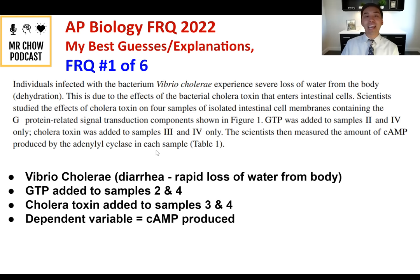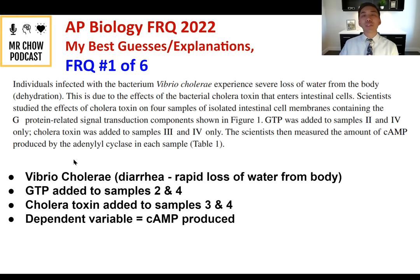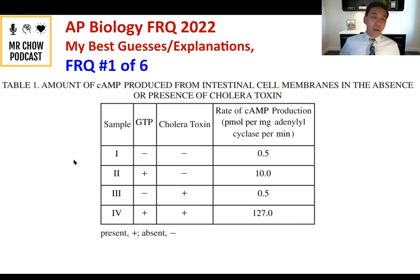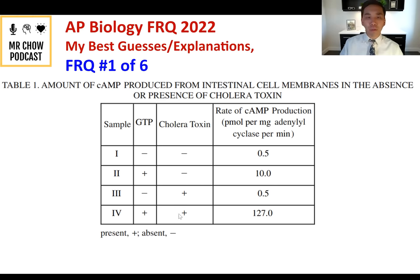Looking at the diagram: samples one and two don't have cholera toxin; three and four do. Samples two and four have GTP added. The dependent variable is the rate of cAMP production. A quick glance shows that samples two and four have bigger amounts of cAMP production versus one and three. There are four questions — A, B, C, and D — and I'll walk through each one with proposed answers.